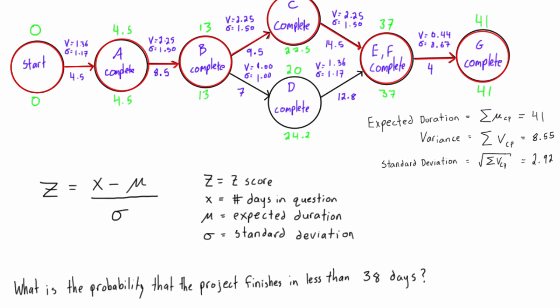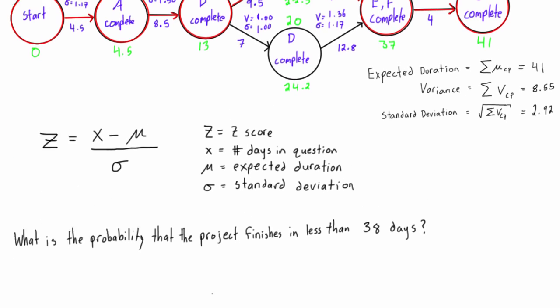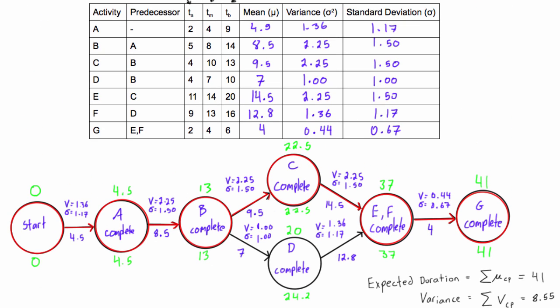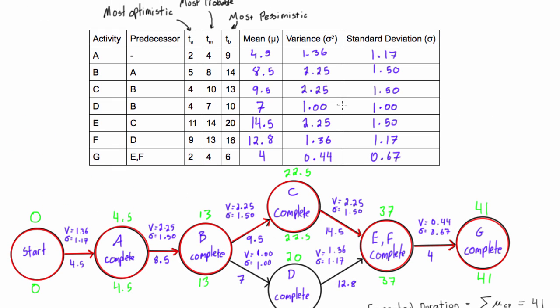Moving on, what we want to do now is find out what is the probability that the project will finish in less than 38 days. So we know that its expected duration is 41 days, but we also know that expected duration isn't a guaranteed thing. If we look at the expected duration of any individual activity, for example activity A, its expected duration was 4.5 days.